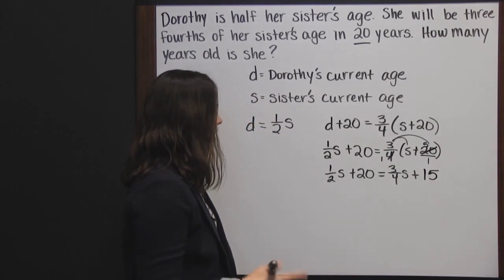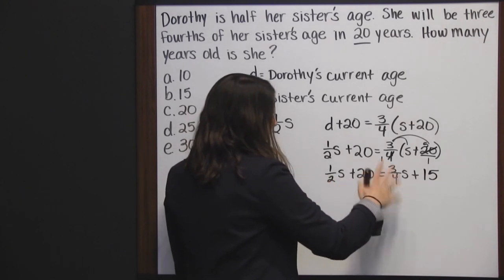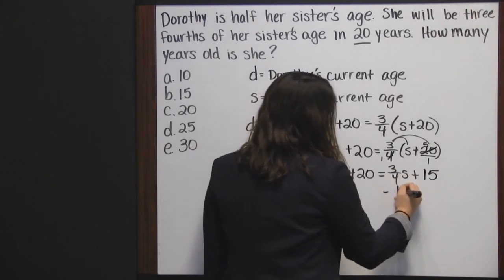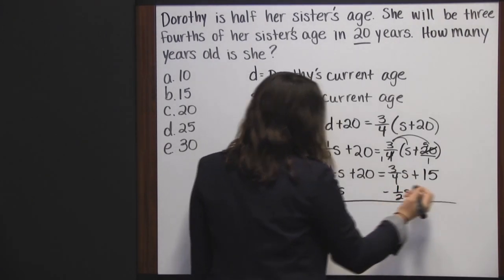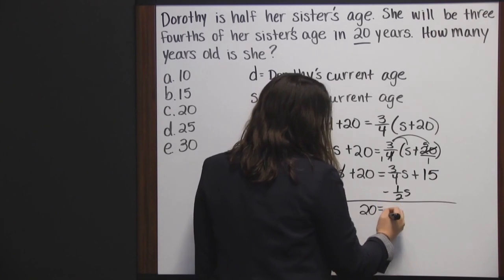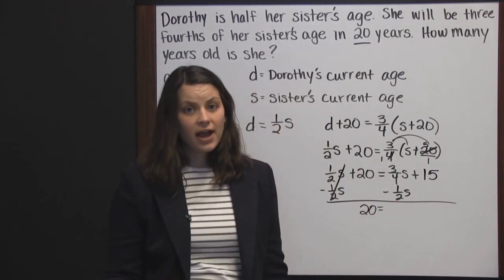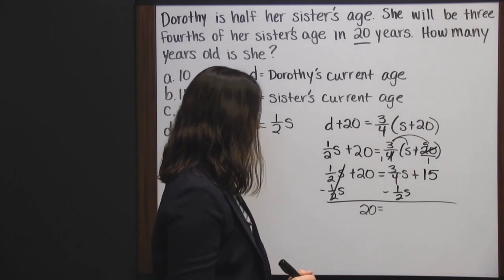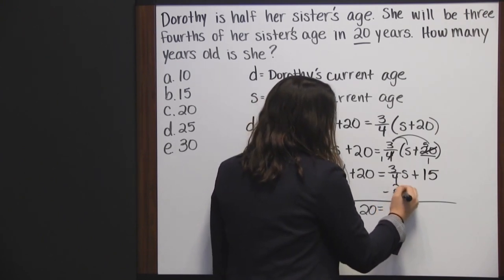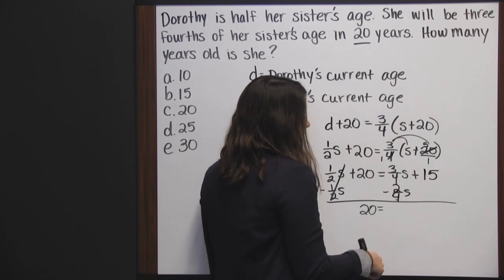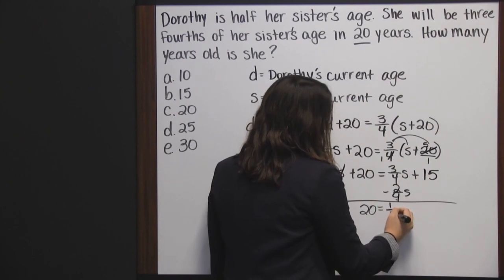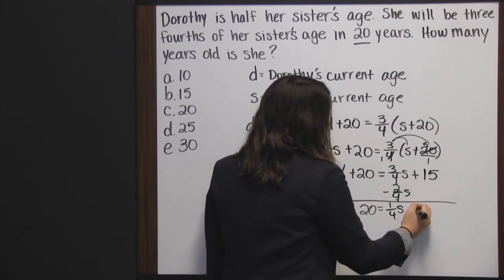Okay, so we need to get all of our variables on the same side. To do that, I'm going to subtract one-half S from both sides. One-half S minus one-half S is zero. I bring down 20 and that equals — to subtract fractions I have to have common denominators. One-half is also two-fourths, so I change one-half to two-fourths. When I subtract, three minus two is one, and your denominators stay the same: one-fourths, plus fifteen.